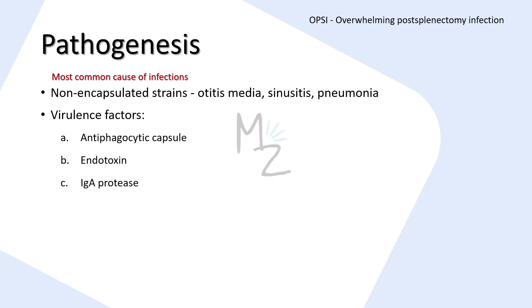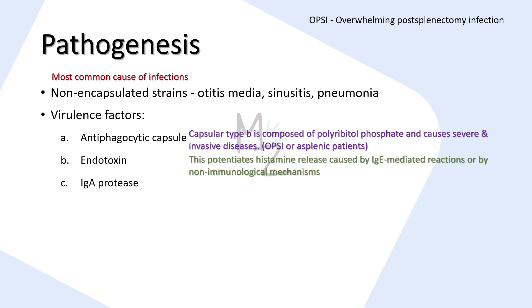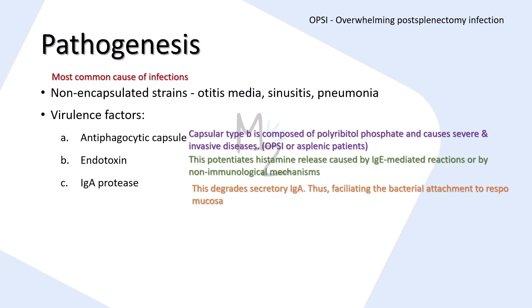Virulence factors of Haemophilus influenzae: The first is its antiphagocytic capsule — the capsular type B is composed of polyribitol phosphate and causes severe and invasive diseases, specifically in asplenic patients. The second virulence factor is endotoxin, which potentiates histamine release caused by IgE-mediated reactions or by non-immunologic mechanisms. The third virulence factor is IgA protease, which degrades secretory IgA, facilitating bacterial attachment to the respiratory mucosa where it can cause infections.